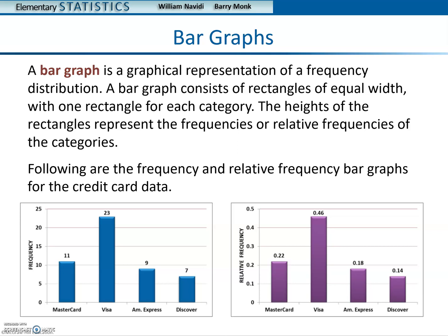Following are the frequency and relative frequency bar graphs for the credit card data. Notice on the left we have the frequency column with the blue picture, and the relative frequency column with the purple picture. Over here on the bottom, which would be normally the x-axis, we have MasterCard, Visa, American Express, Discover.